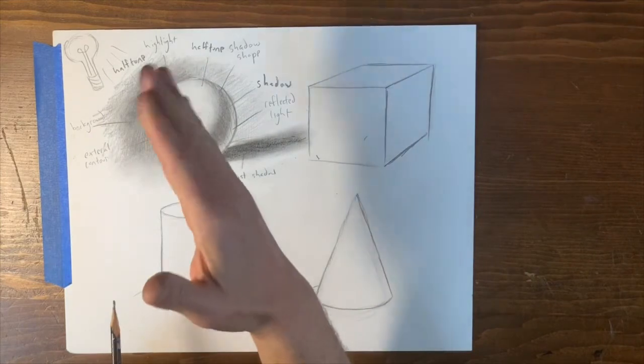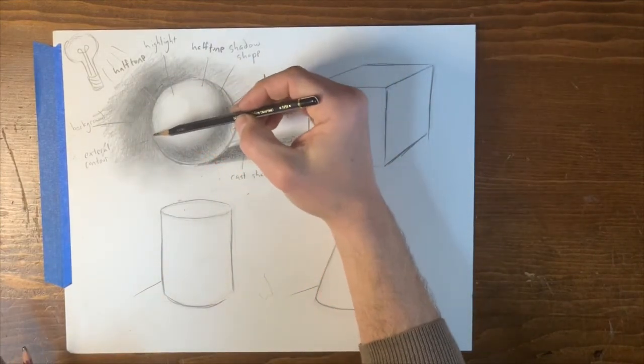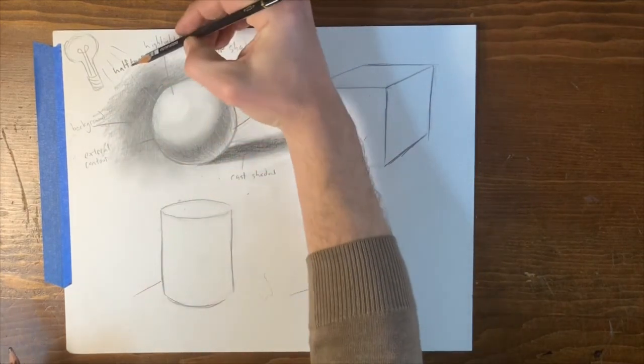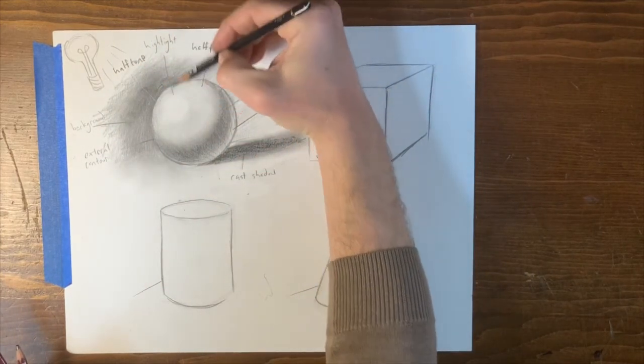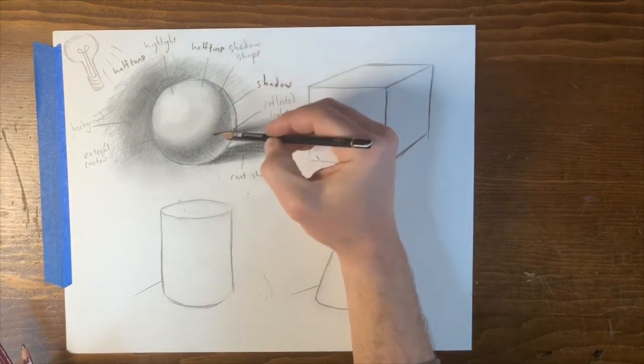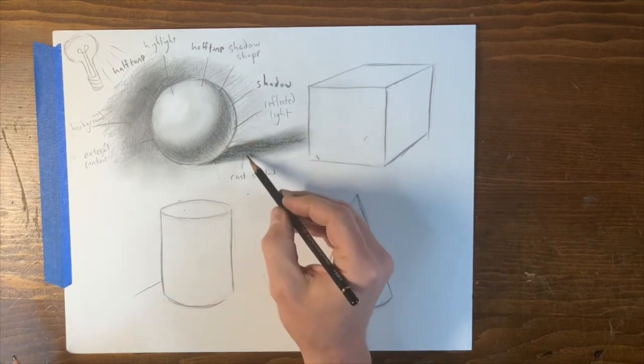Okay, so there we have, again, let's run through the stages. We have the background, we have the external contour. We should probably switch those around. Half tone, half tone right here. Highlight, half tone, shadow shape, deep shadow, reflected light, and cast shadow.